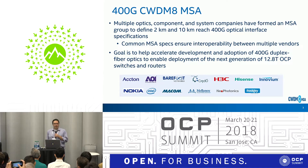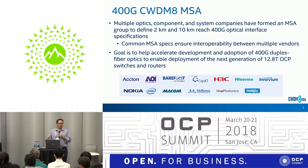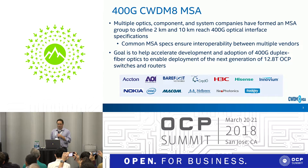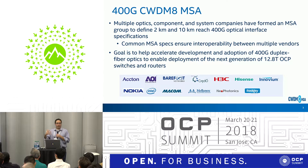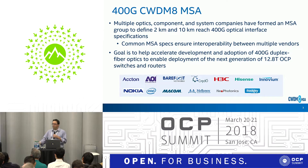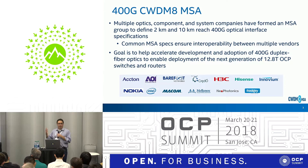The CWM8 MSA is an industry group. It has companies shown at the bottom — some component vendors, some module vendors, some system vendors — all getting together to define interoperability specifications for 400 gigabit per second optics. Common MSA specs, or multi-source agreement specs, ensure interoperability just like an IEEE spec would, so that if you buy an optic compliant to the CWM8 MSA, it'll talk to another module that implements the CWM8 MSA specs.